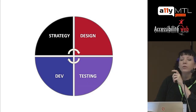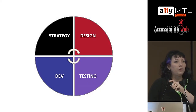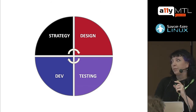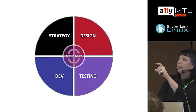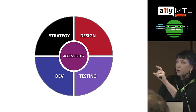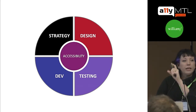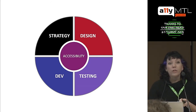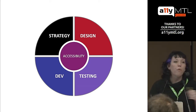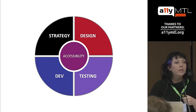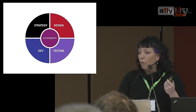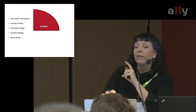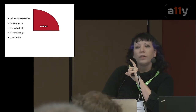Most of us in the accessibility industry know that accessibility must be integrated into strategy, into design, into development, and into testing. The way to be successful in any web project is to have it on all four of those levels — otherwise something is going to fall through. For the purposes of what we're talking about right now, this is primarily focused on the design elements.